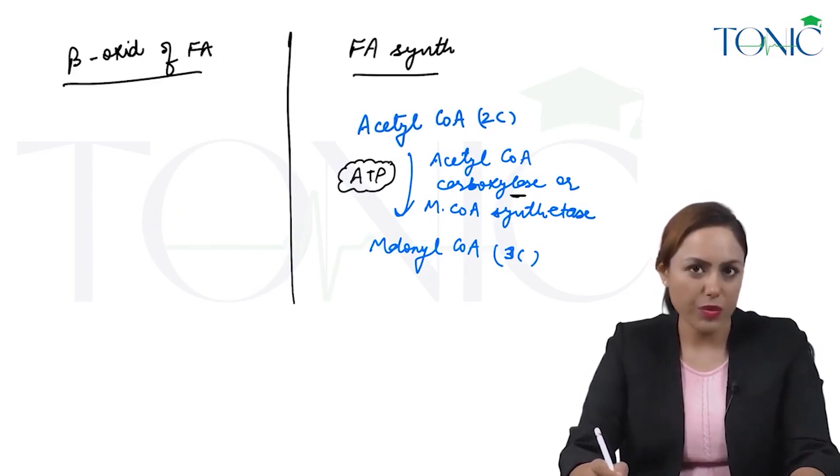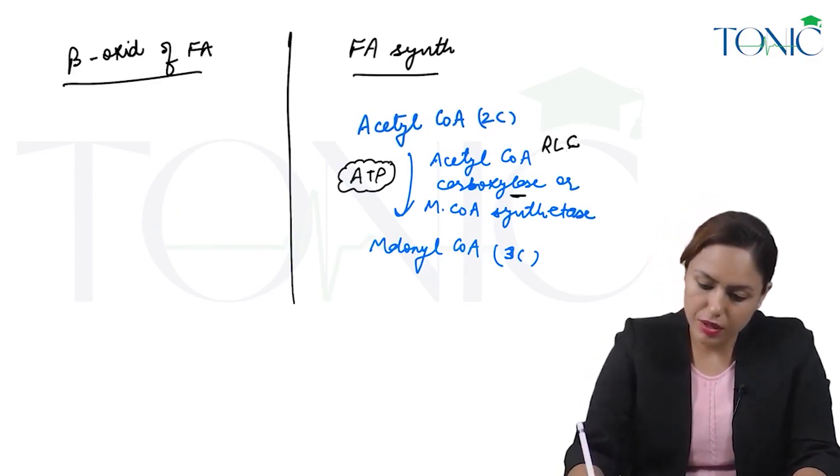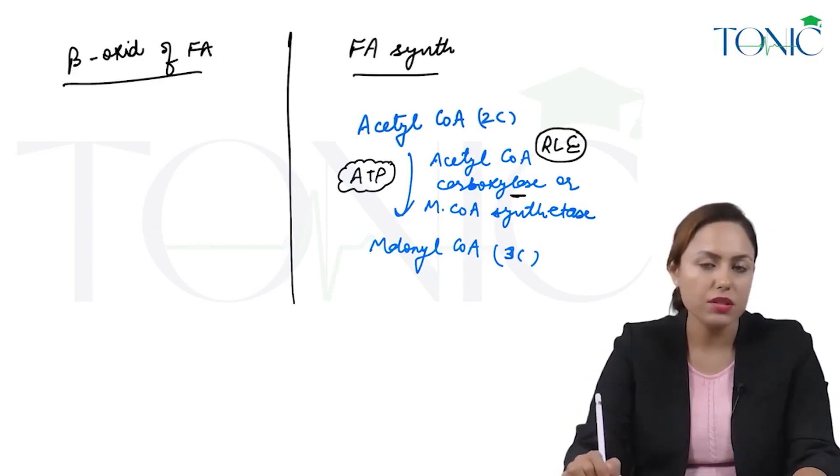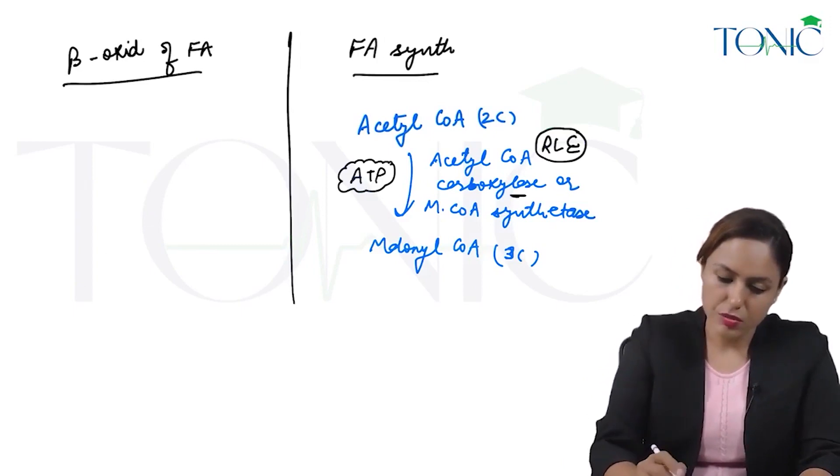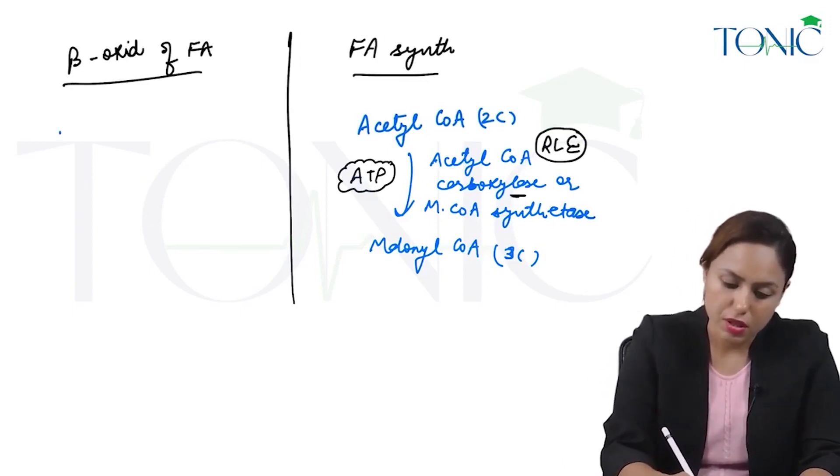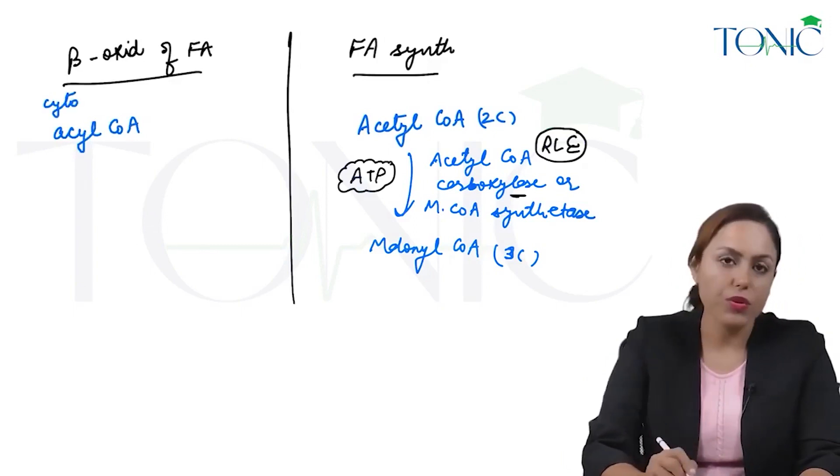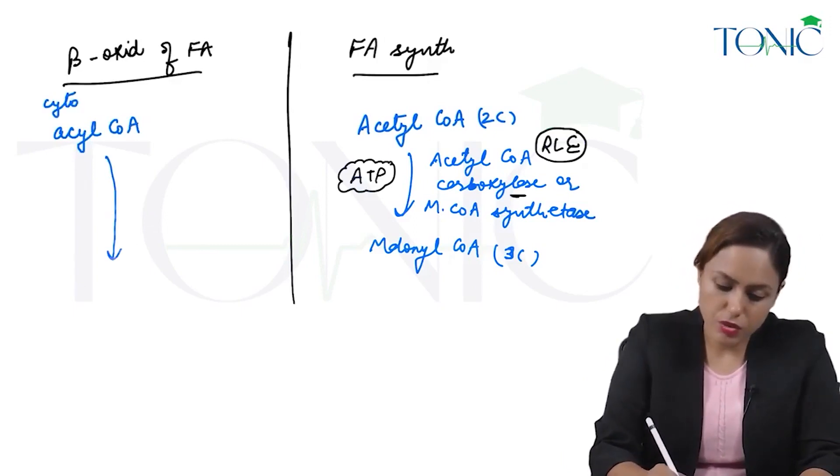In beta oxidation of fatty acid, acyl CoA is formed in the cytoplasm. This acyl CoA has to enter into the mitochondria because the main beta oxidation pathway will occur in the mitochondria.